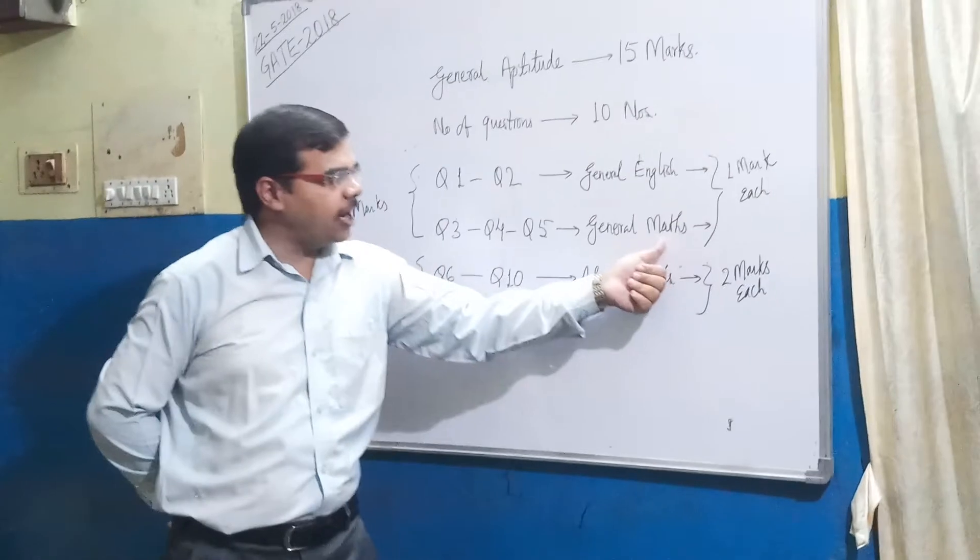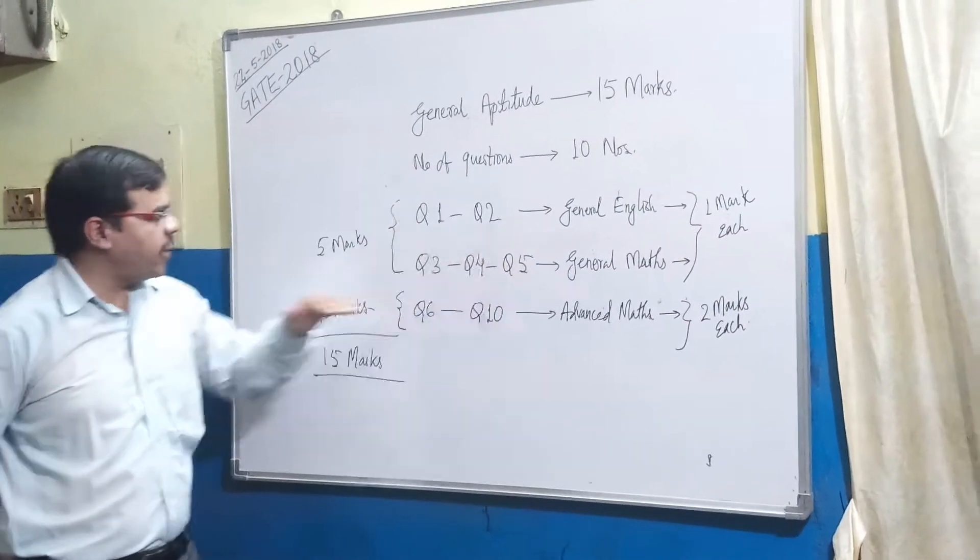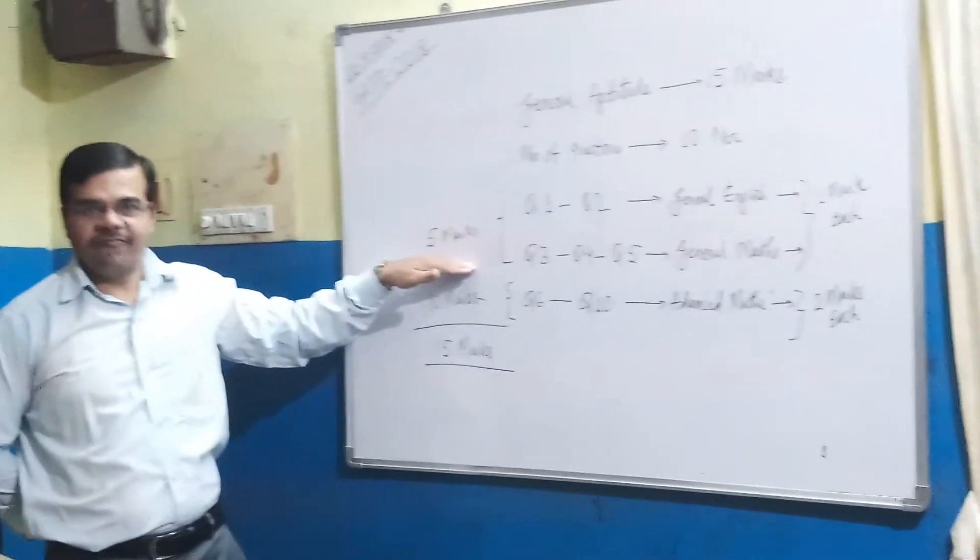Question 3, question 4, and question 5, it is of General Maths. It is also carrying 1 mark each. So total from question 1 to question 5, you are having 5 marks.